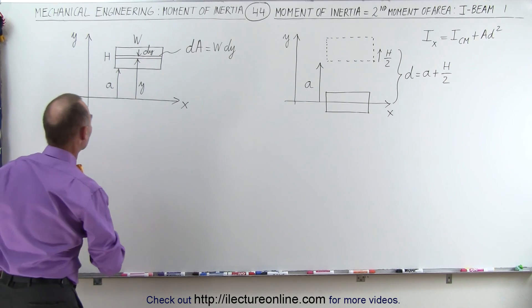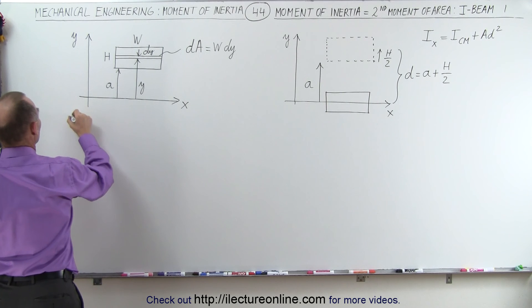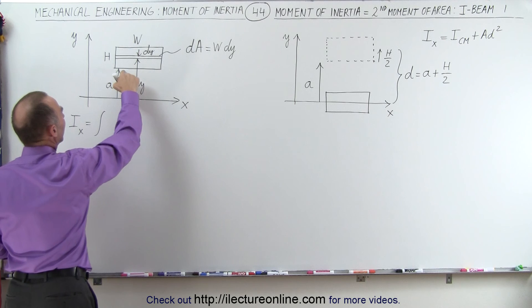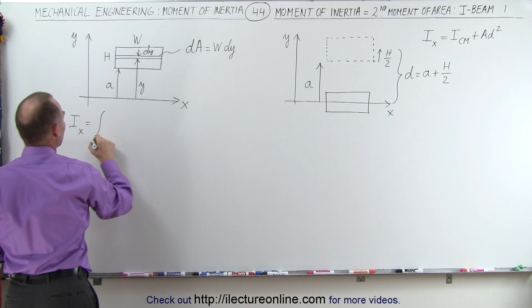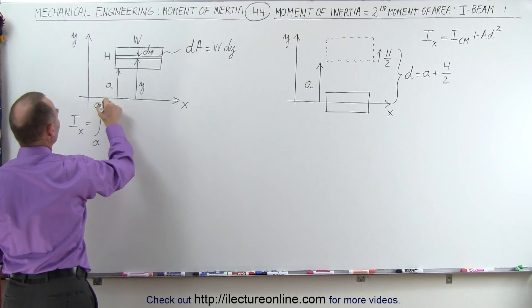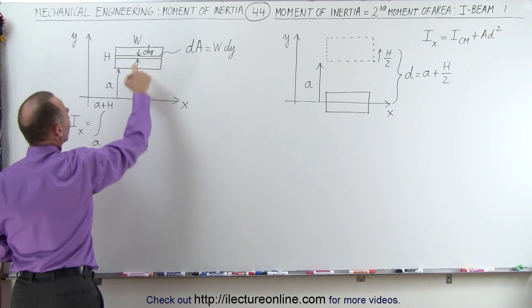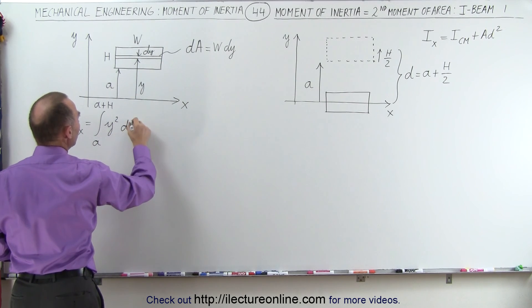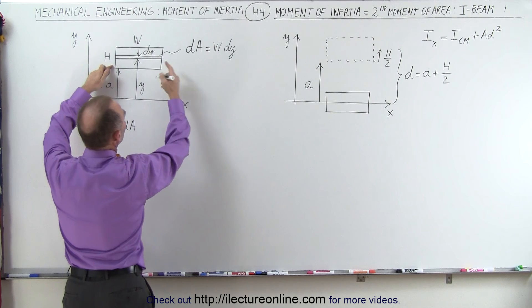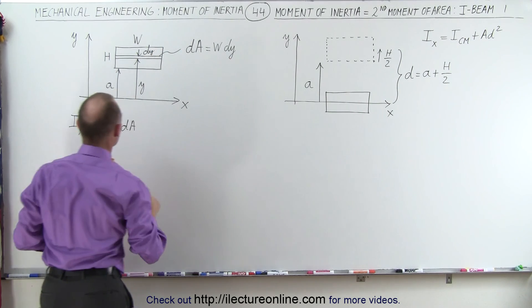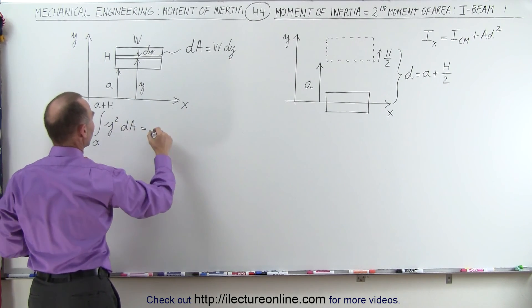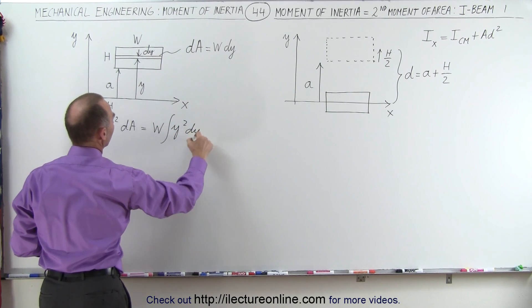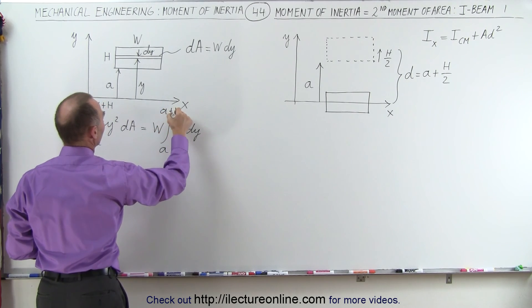So first, let's do it like this. To find the moment of inertia relative to the x-axis, that is equal to the integral from A to A plus the height of that portion of the beam — so from A to A plus H — of the distance to the element squared, so y squared, times the area of that area element dA. And dA is equal to the width of that portion times dy. So this becomes equal to w times the integral of y squared dy from A to A plus H.